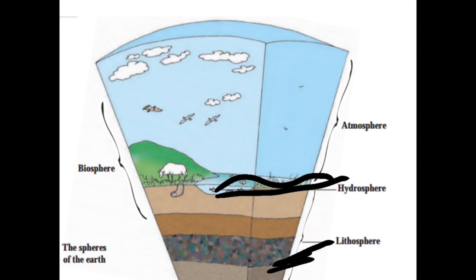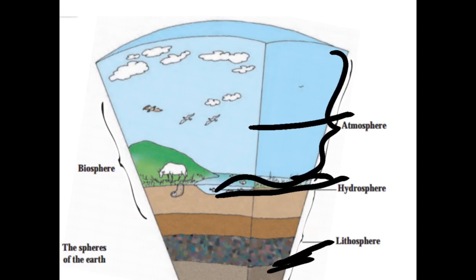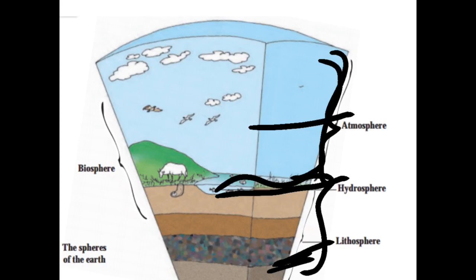And the presence of air is known as the atmosphere. This part is known as the atmosphere. The atmosphere means the presence of air — where air is present, we call it atmosphere. So the three spheres of the Earth are lithosphere, hydrosphere, and atmosphere.